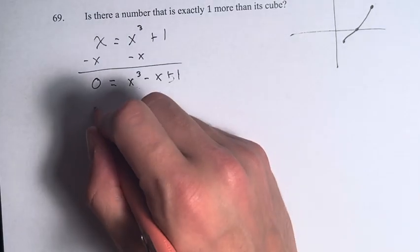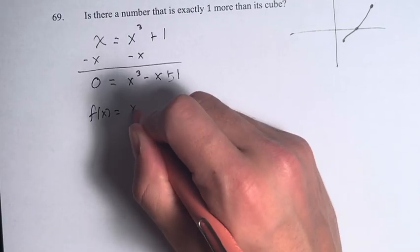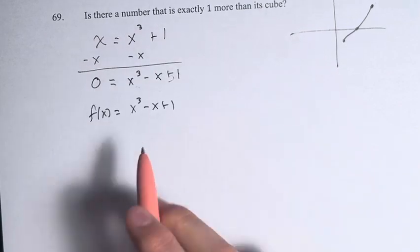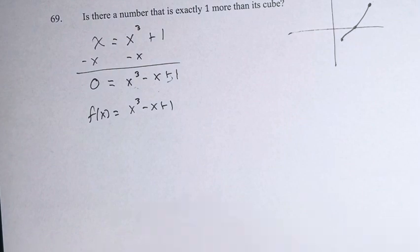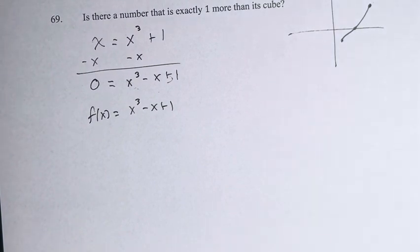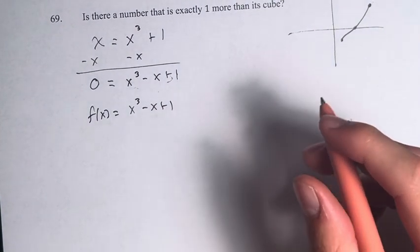So we have f of x is equal to x cubed minus x plus one. We want to find solutions to this equation, but we can't actually compute them directly, so we're just going to prove that there are some.